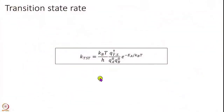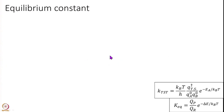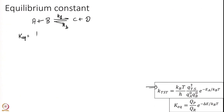Let us start with the first property. This is the rate constant that we have derived from Transition State Theory. Let us start with the first point which is the equilibrium constant. Transition State Theory is given here. Let us assume I have some reaction that is reversible, and K equilibrium is K_f over K_b.